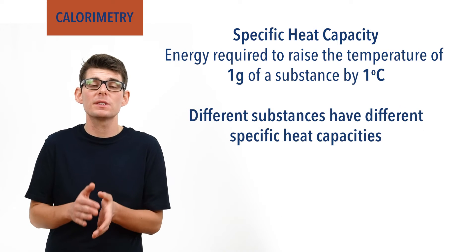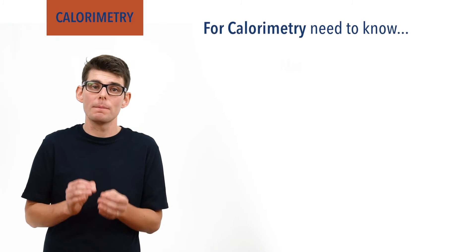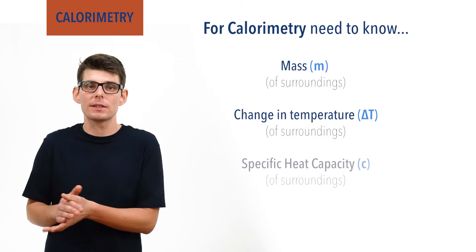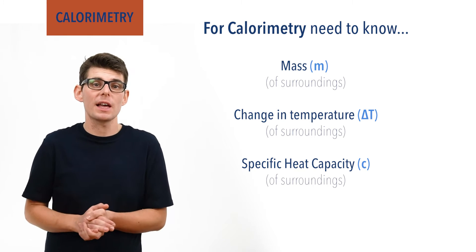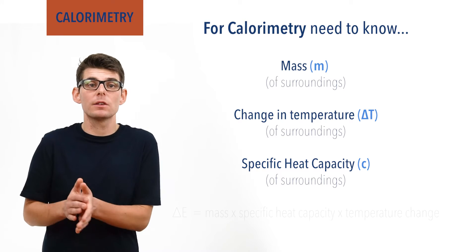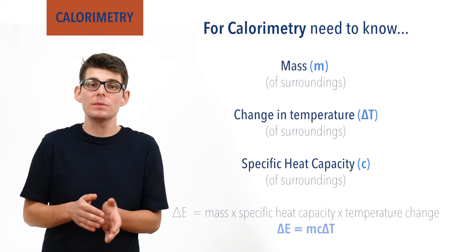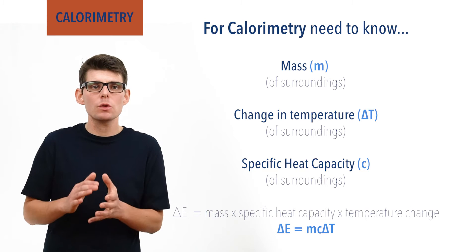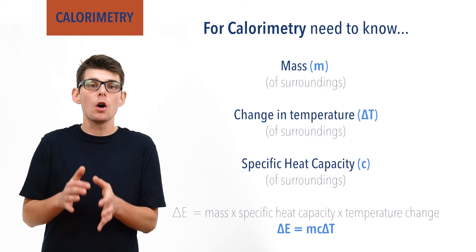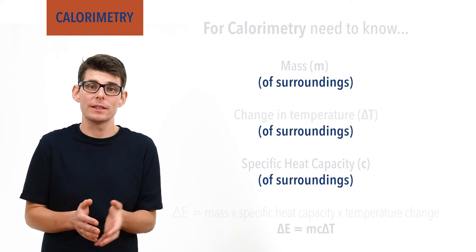Different substances have different specific heat capacities. With calorimetry, it is vital we know the mass of the surroundings, how much it changes temperature, and its specific heat capacity. Combining all these things together gives us an equation: change in thermal energy equals mass times specific heat capacity times temperature change, or delta E equals MC delta T. It is essential to realise that the mass, specific heat capacity, and temperature change are all for the surrounding substance of a reaction — the reaction itself isn't really important yet at all.